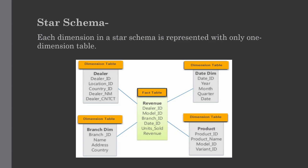Our first schema type is the star schema. As the name suggests, each dimension in a star schema is represented with only one dimension table, connected to a central fact table. The dimension tables have a primary key from the fact table in the form of a foreign key. This diagram shows the financial data of a company with respect to four dimensions: dealer, date, product, and branch — with one fact table which is the revenue table.